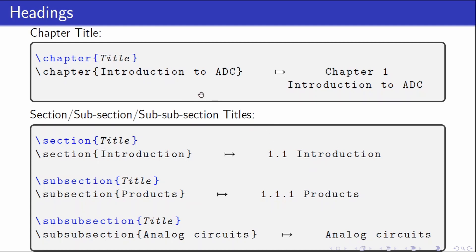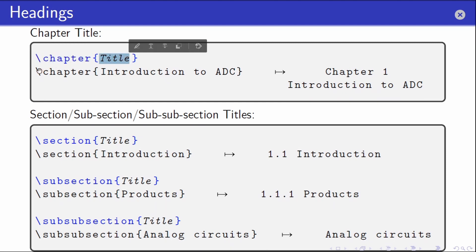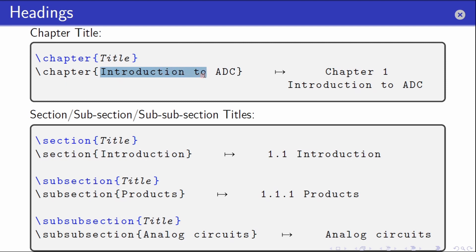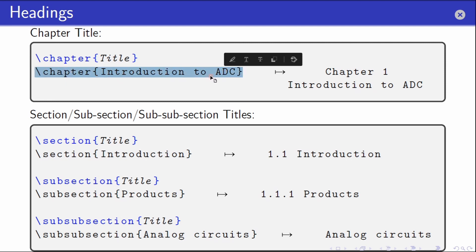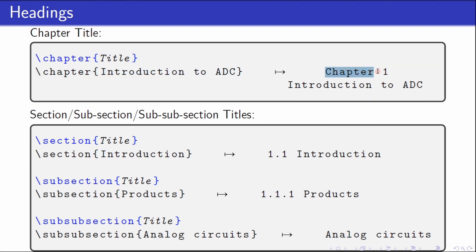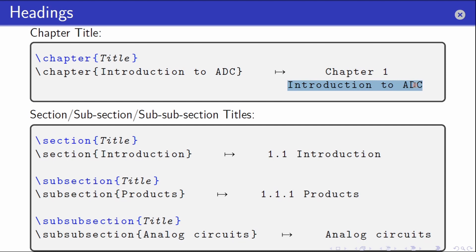In order to create a chapter title we use the \chapter command with the title placed between curly braces. Here is an example shown at the bottom — to create a chapter titled 'Introduction to ADC' this is how it is fed inside the .tex file. The output is reflected on the right side, where 'Chapter 1' is followed by the chapter title on the next line.